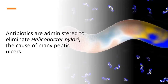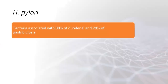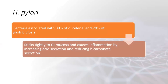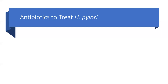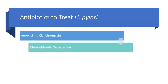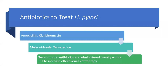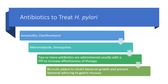Antibiotics are administered to eliminate the bacteria Helicobacter pylori, the cause of many peptic ulcer diseases. This bacteria is associated with 80% of duodenal and 70% of gastric ulcers. It sticks to the GI mucosa and causes inflammation by increasing acid secretion and reducing bicarbonate secretion. Antibiotics used to treat H. pylori include amoxicillin, clarithromycin, metronidazole, and tetracycline; two or more are usually administered with a PPI. Bismuth subsalicylate inhibits bacterial growth. These are prescription drugs.